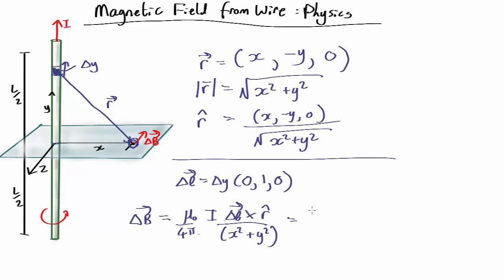Okay, so that's mu naught I delta y (0, 1, 0), all over 4 pi times (x squared plus y squared).